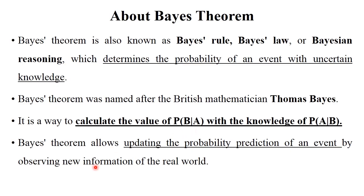Bayes' theorem allows you to update the probability prediction of an event by observing new information in the real world. It updates a particular prediction or the prediction of probability, which is why Bayes' theorem is used.